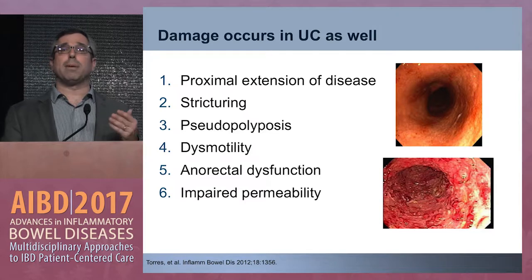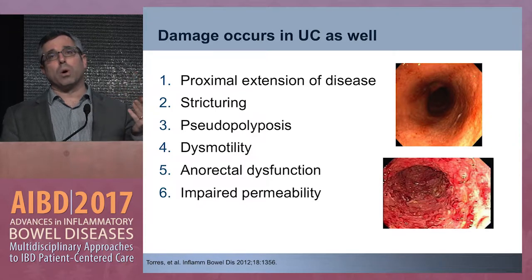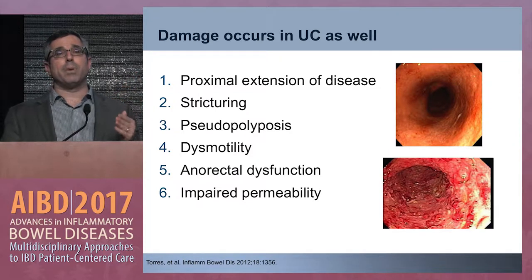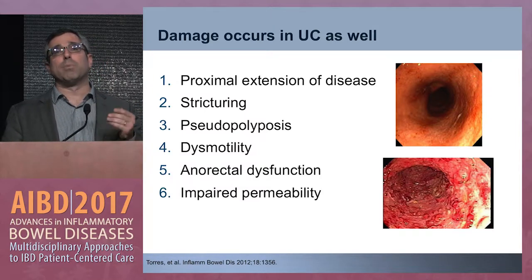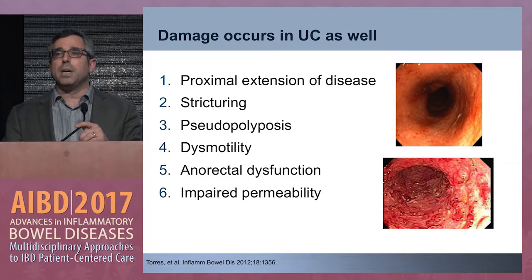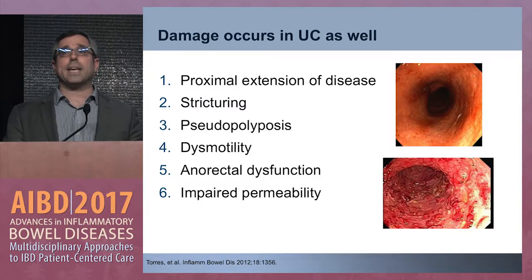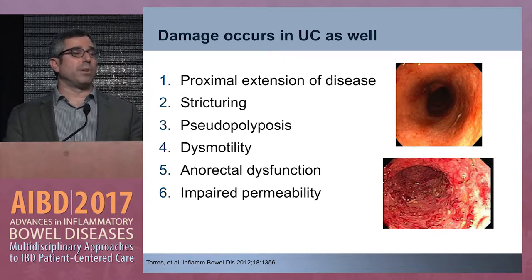Proximal extension of disease is a problem because once patients start with left-sided disease and then extend, it's more than just needing oral medications — these patients actually have more refractory disease and are difficult to treat. We've talked about the problem with stricturing. Pseudopolyposis in itself isn't a big problem, but when you're surveying them and one or two come back adenomas, you're really stuck. We're sometimes taking colons out because we simply can't survey them due to longstanding undertreated disease that led to scarring and pseudopolyps.